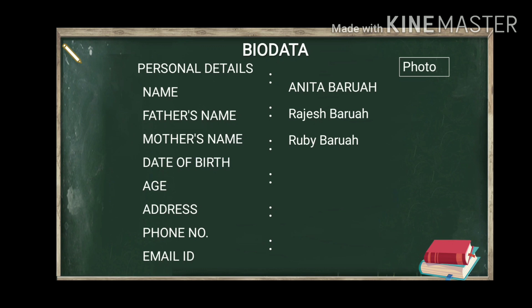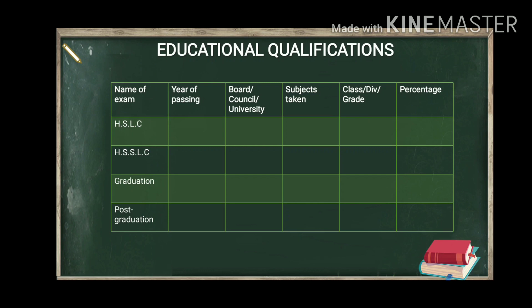This is something many of you get wrong — you never write your name in block letters, but this is a very essential part of your bio data. You can also add your gender, nationality, or caste in this section. For the educational qualification section, always draw a table. The columns should be: name of exam, year of passing, board/council/university, subjects taken, class, division, grade, and percentage.